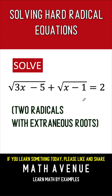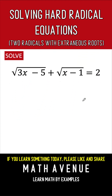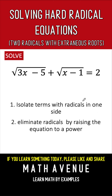So let's do this together. First, let's recall that there are two things we would like to accomplish when solving a radical equation. Number one, we want to isolate the terms with a radical on one side of the equation. But since there are two terms with radicals, we are going to apply this condition two times.